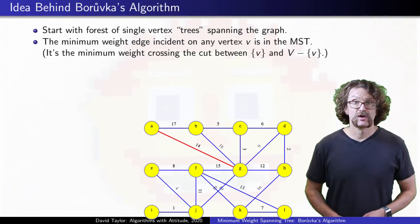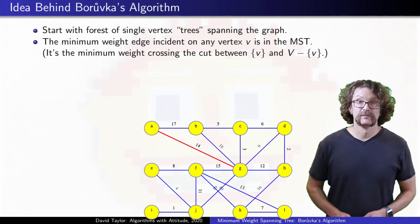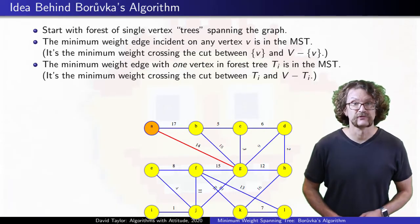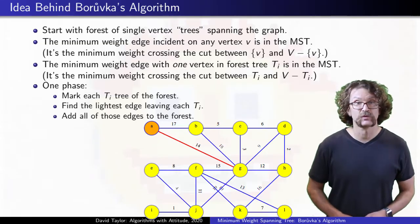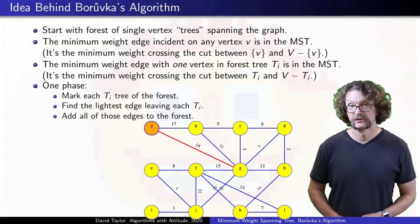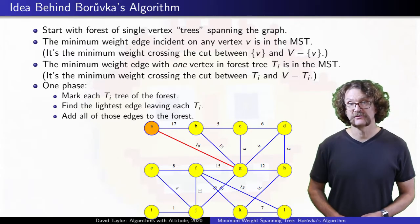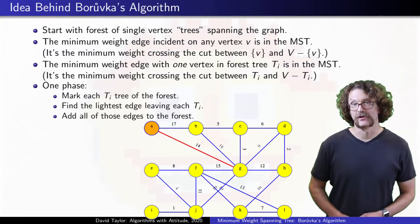If you calculate all of those edges, all of them are in the minimum spanning tree. Borůvka's algorithm generalizes that. It works in phases, where in each phase, it figures out what the trees of the growing forest are, finds the minimum edge crossing from each tree to the rest of the graph, and adds all of those edges to the forest.